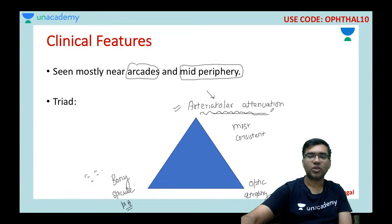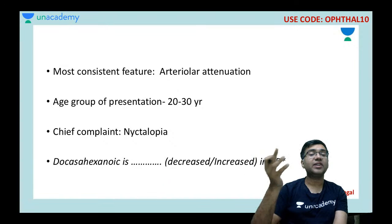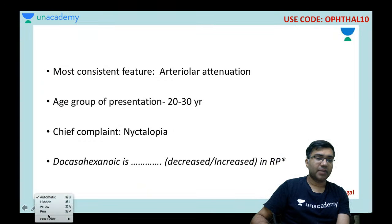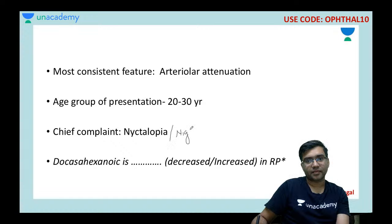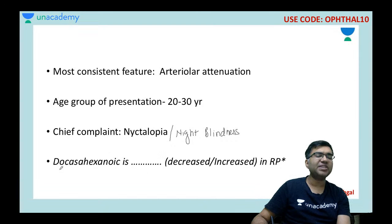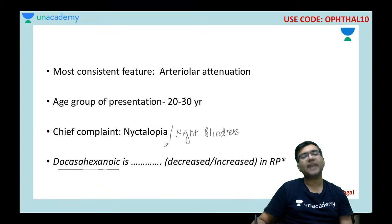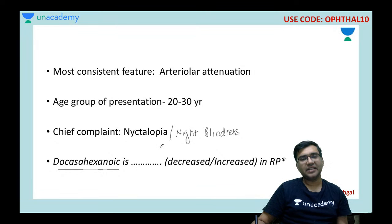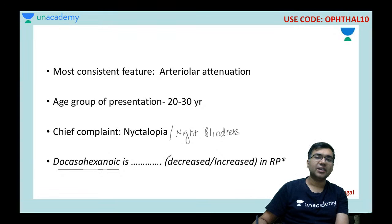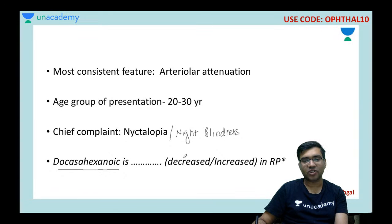The age group is around 20 to 30 years and the chief complaint is nyctalopia or night blindness. An important exam question: docosahexaenoic acid (DHA) is decreased in retinitis pigmentosa — this was asked in AIIMS exam two years back. Just note it down.